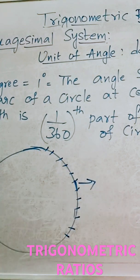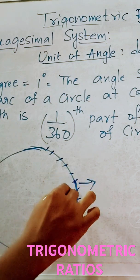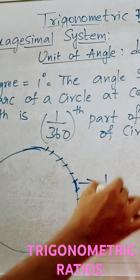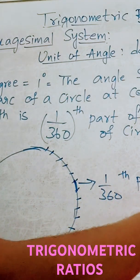So, this is arc of a circle. So, from here to here, this is arc of a circle whose length is how much? The length of this arc is 1 by 360th part of circumference of the circle.